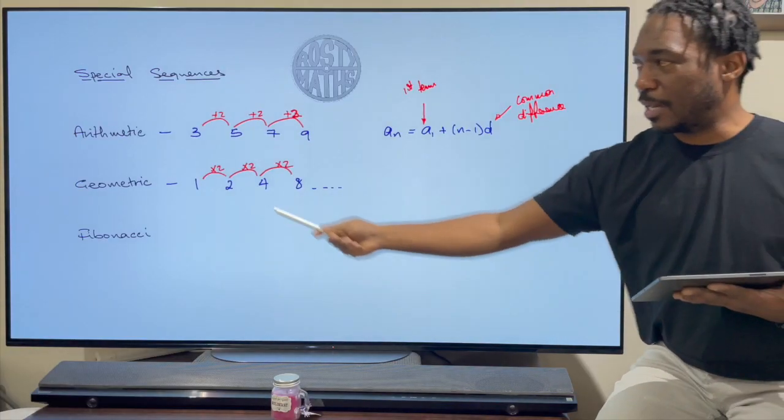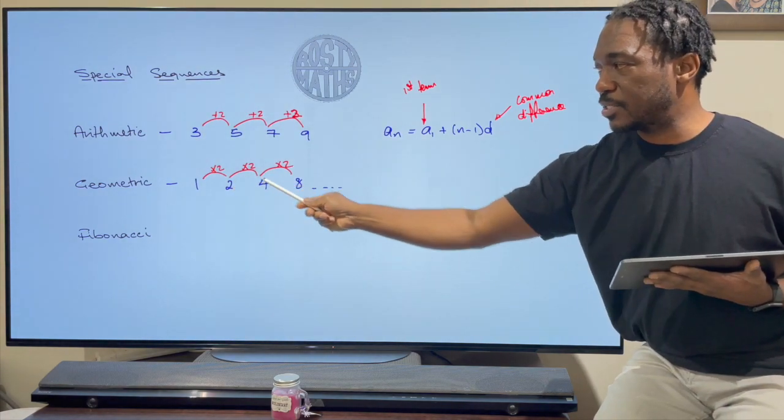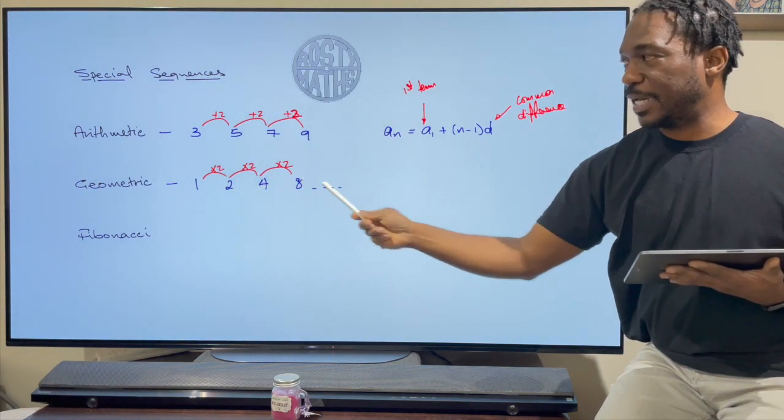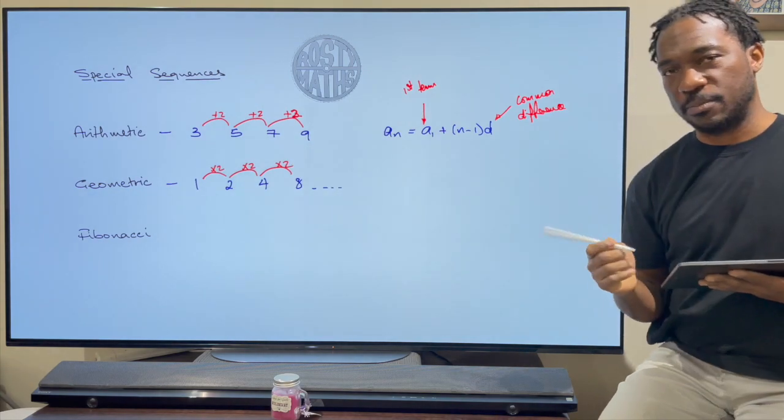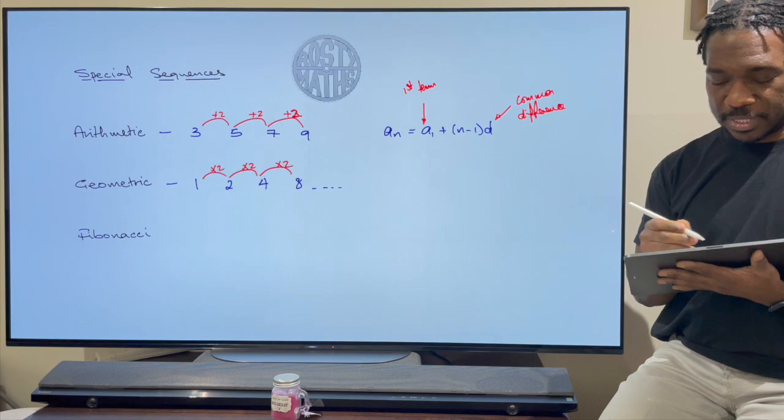So if you can see here I multiply 1 by 2 to get 2, then I multiply 2 by 2 to get 4, and then 4 times 2 gives me 8. This is my common ratio and that's how you know a geometric sequence when you see one, it has a common ratio.